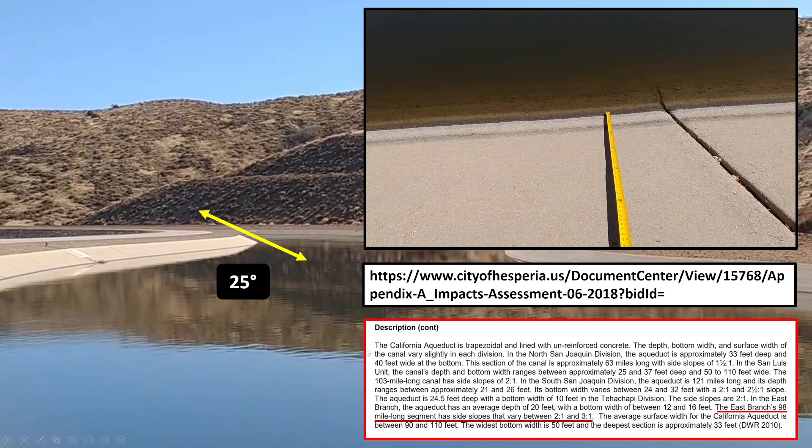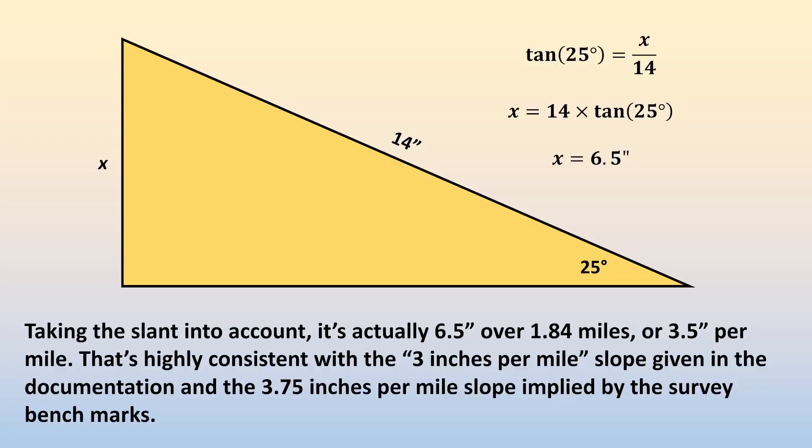But we need to make a correction, because what JT was measuring was actually a slant. So I've done my best here to line up that yellow arrow, with a still shot from the video. And that arrow is obviously meant to represent JT's measuring tape. And I had to rotate at 25 degrees to get the best match. And 25 degrees seems to match the only document I could find that talks about the side slopes of the aqueduct, as being between two to one, which is 26 degrees and three to one, which is 18 degrees. All right. Then all we need to do to take the slant into account is some simple trigonometry and we end up with a rate of 3.5 inches per mile. Again, that's consistent with the three inches per mile given in the documentation and the 3.75 inches per mile implied by the survey benchmarks.